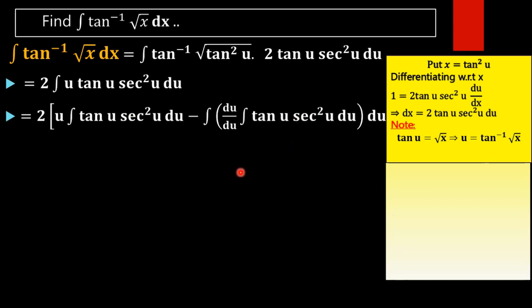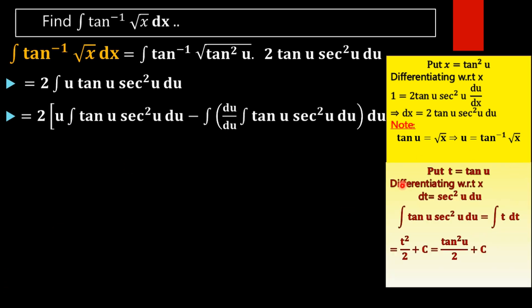Next, we need to find ∫tan(u)·sec²(u)·du. To do this, let t = tan(u), so dt = sec²(u)·du. The integral ∫tan(u)·sec²(u)·du reduces to ∫t·dt.